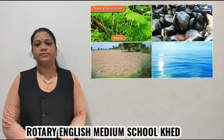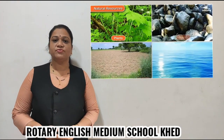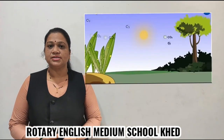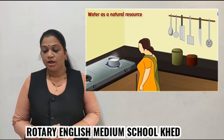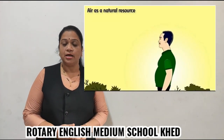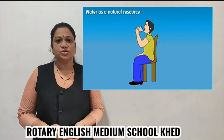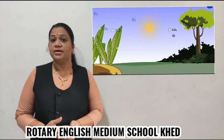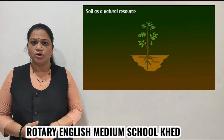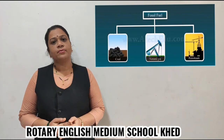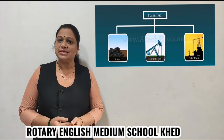Natural resources are the things which we get from nature and they are useful for us in our daily life. We need air to breathe, water to drink, and plants also need air, water and sunlight. Plants cannot grow without soil. So soil as a natural resource is very important for plants, and coal and oil are also natural resources.